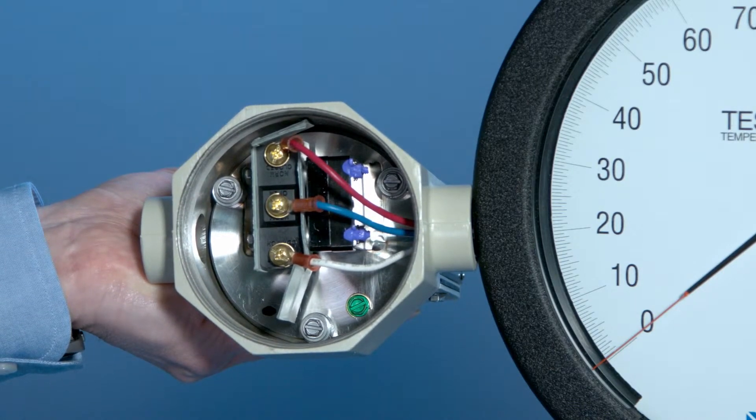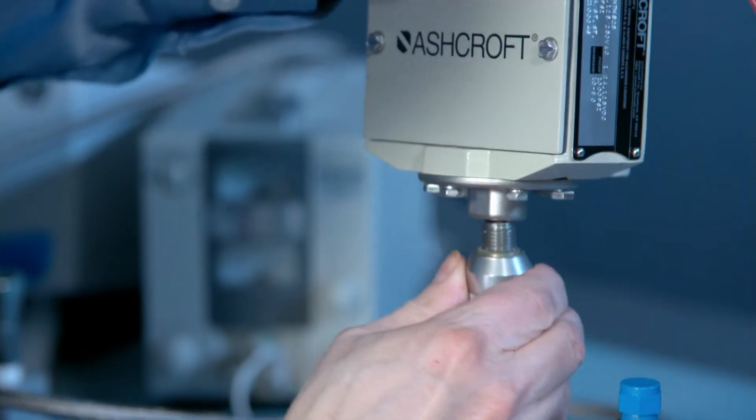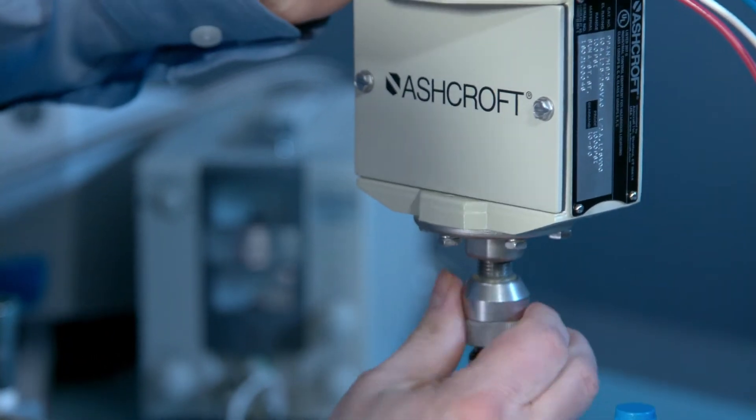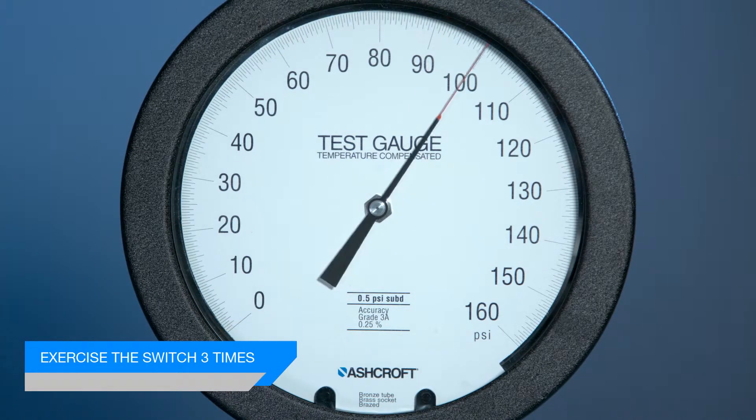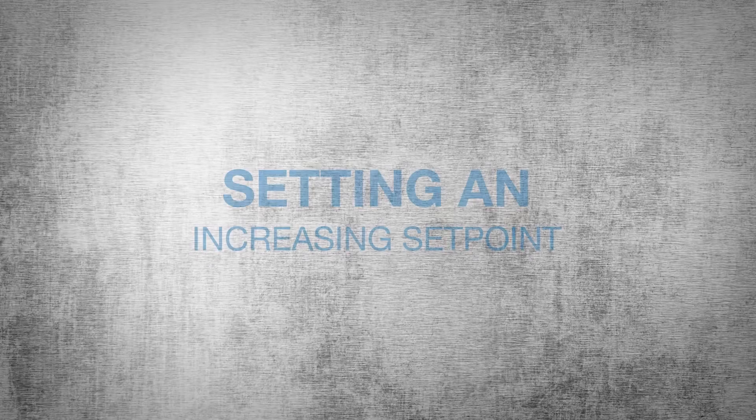The first step is to exercise the switch three times. You exercise the switch by starting at zero pressure and taking it to full scale of the switch, which in this case is 100 pounds.